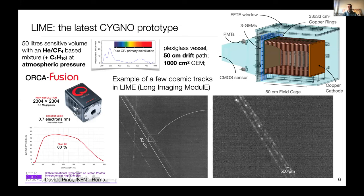The latest prototype is called LIME — a 50-liter sensitive volume detector filled with a helium-CF4 mixture, with the possibility of adding a small amount of isobutane to exploit the hydrogen proton in addition to the helium nucleus. The detector is operated at atmospheric pressure, and the light produced inside the GEM is acquired by cameras, specifically the Hamamatsu ORCA Fusion camera. With this approach, it is possible to acquire 40 cm long cosmic tracks without losing details, down to the sub-millimeter scale.